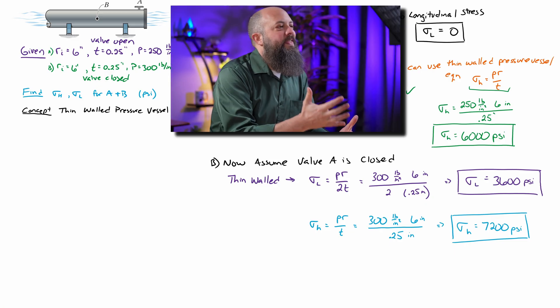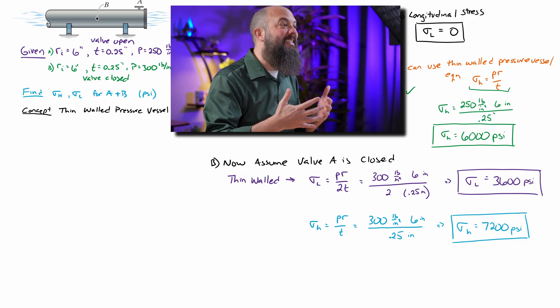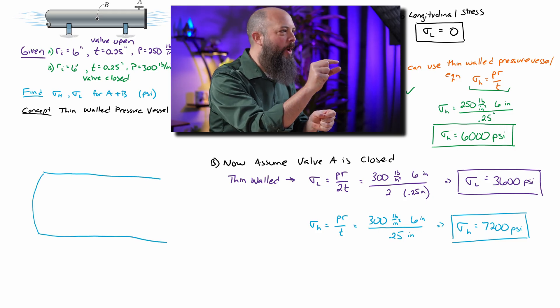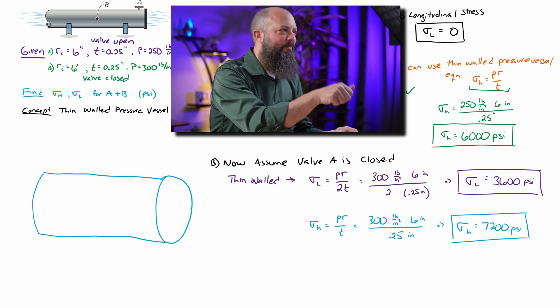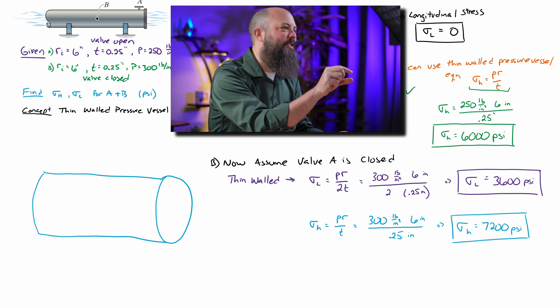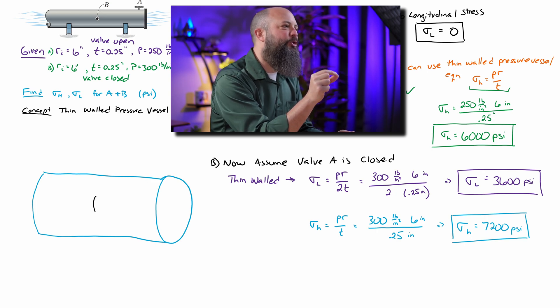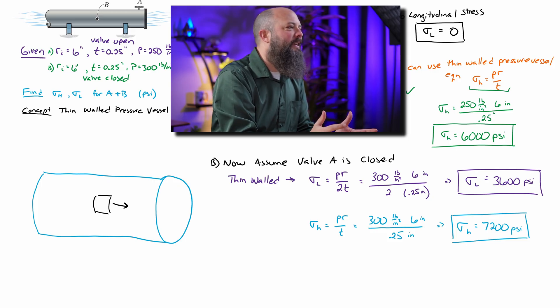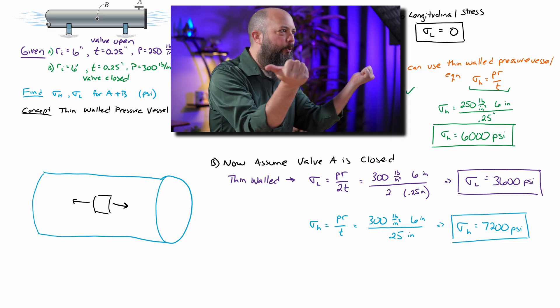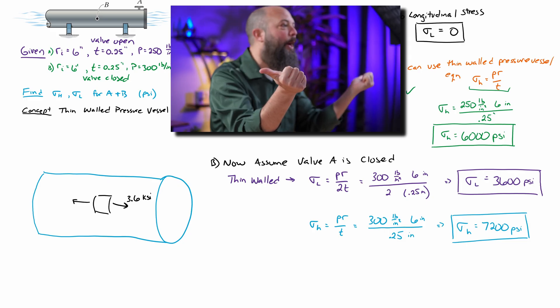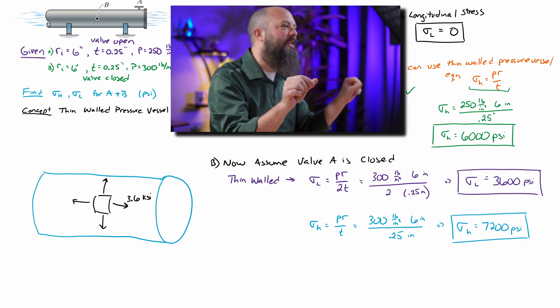Now if I want to draw this stress as a stress element on an actual element, like a little teeny tiny square piece as if we actually went in with a hacksaw or jabsaw and actually cut out a little square of this pipe, and we wanted to look at the stresses on that little square on the edge of the pipe, then we would have the 3,600 PSI pointing outwards in tension because the pressure is trying to stretch it outwards in the longitudinal direction.